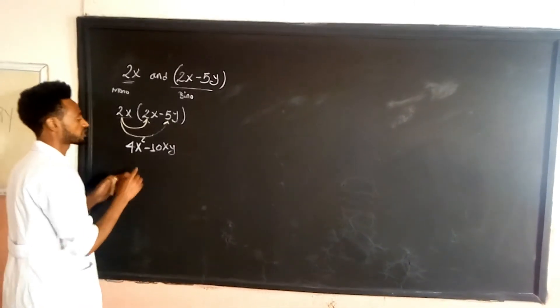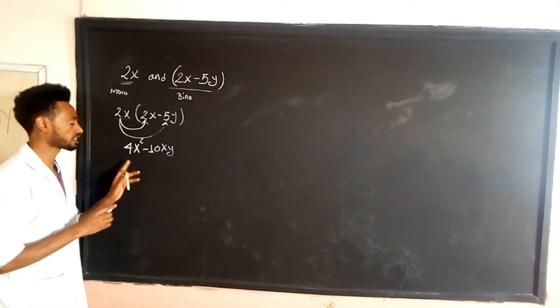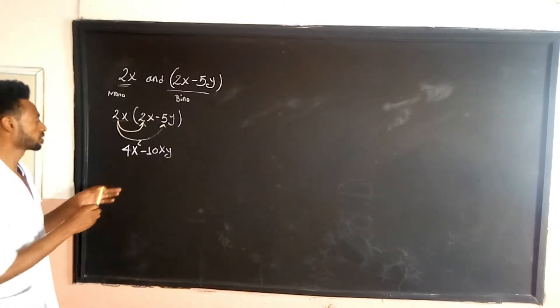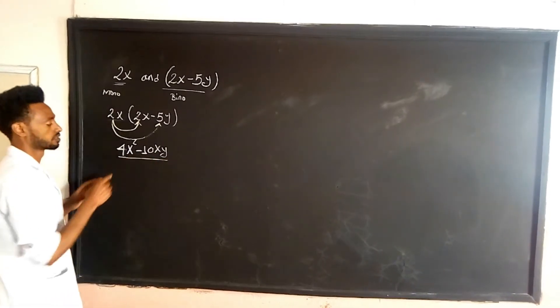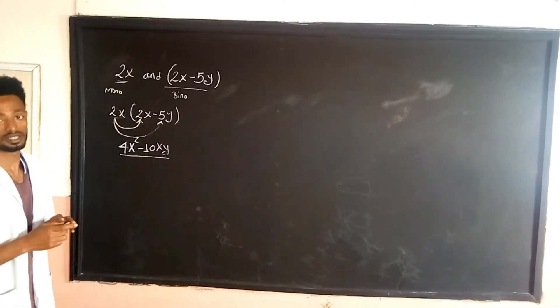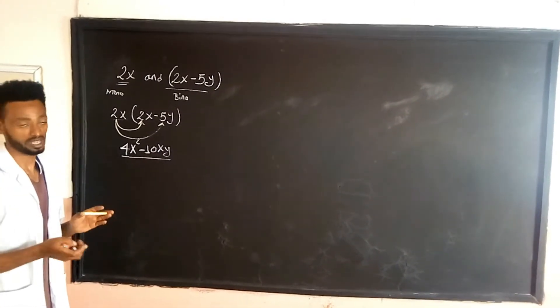So that is the result. The result is the formula: 4x minus 10xy.